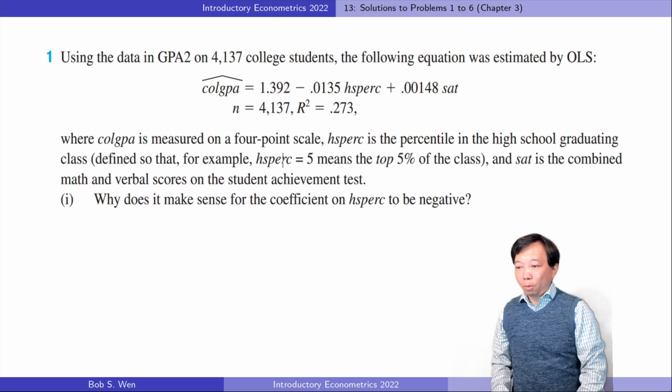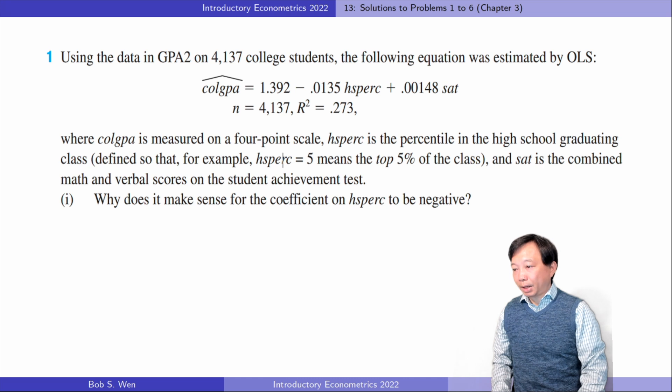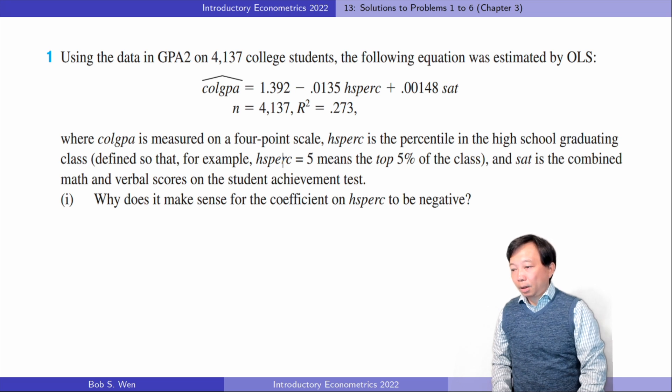A small value of high school percentile means a higher position in the high school graduating class, which implies better performance in high school. A student who is good at her studies in high school tends to get a better GPA in college. So a higher GPA score is associated with a smaller percentile.